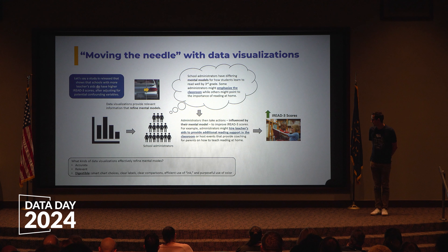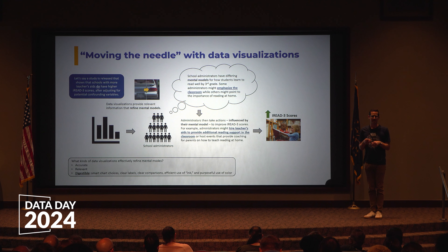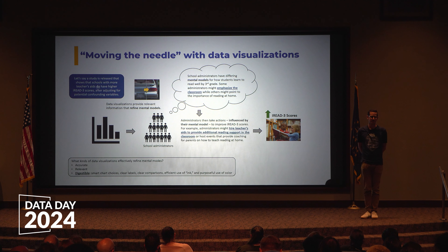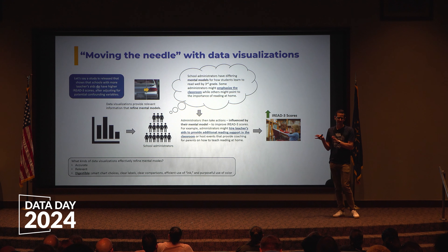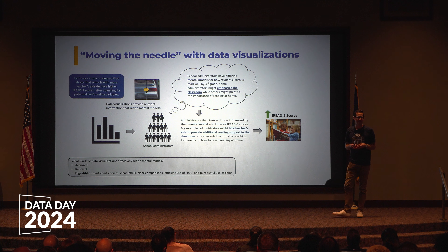So what kinds of data visualizations effectively refine mental models? I think the three large categories are that they're accurate — they calculate things correctly and have an accurate understanding of what the data represents in the real world. They're relevant — a data viz on hospitalization rates won't help third grade reading scores; it has to be subject-domain relevant. And our topic for today: they have to be digestible. Five sub-bullets under that: smart chart choices, clear labels, clear comparisons, efficient use of ink, and purposeful use of color.